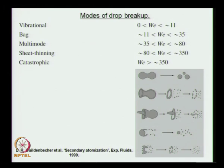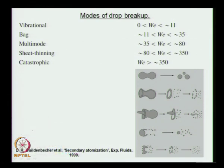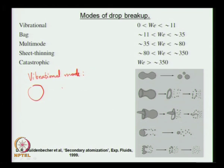This is a simple classification from the work by Gildenbesher et al. from their paper on secondary atomization. What they show is that there are several different regimes of Weber number under which one could expect a single droplet to behave differently over the range of Weber numbers.